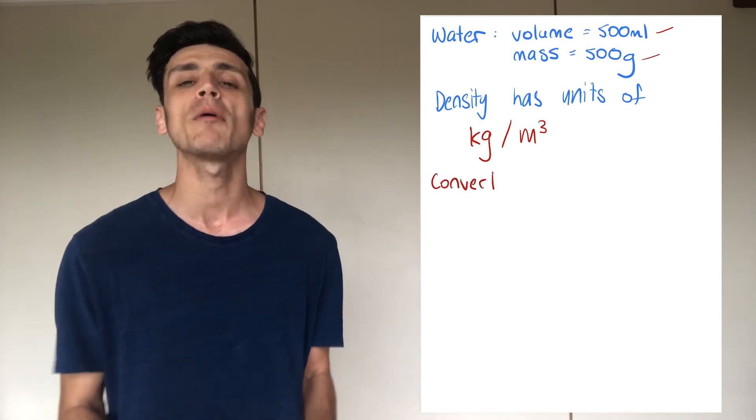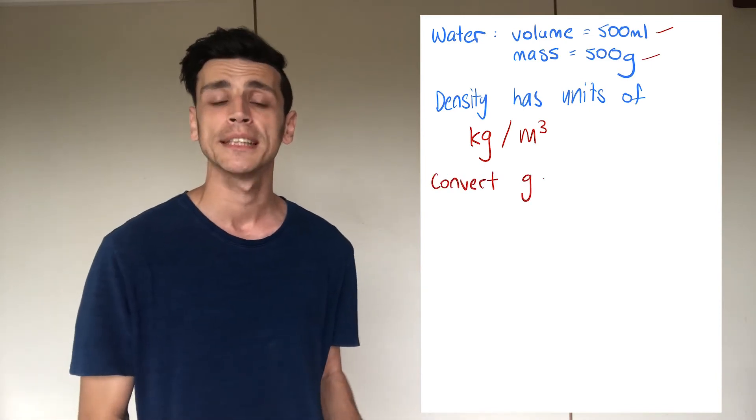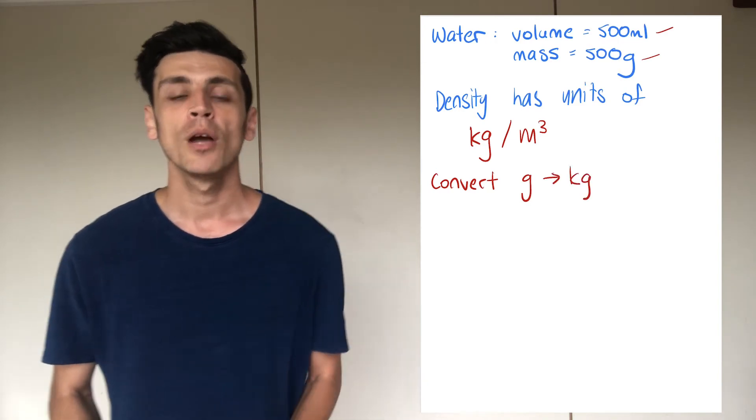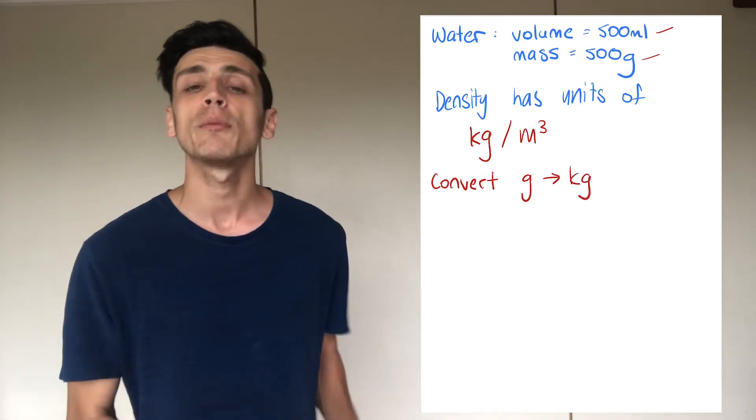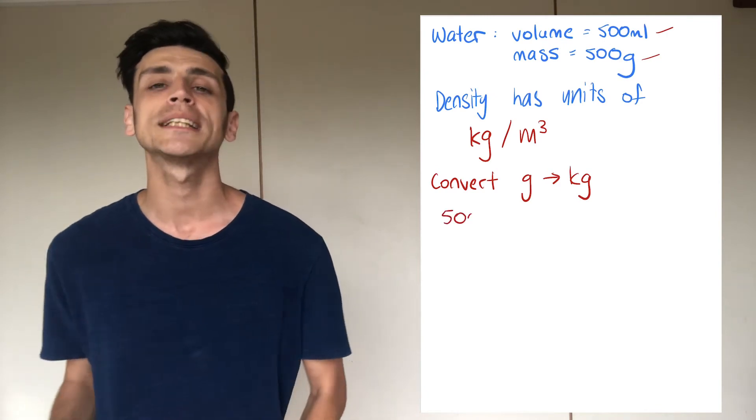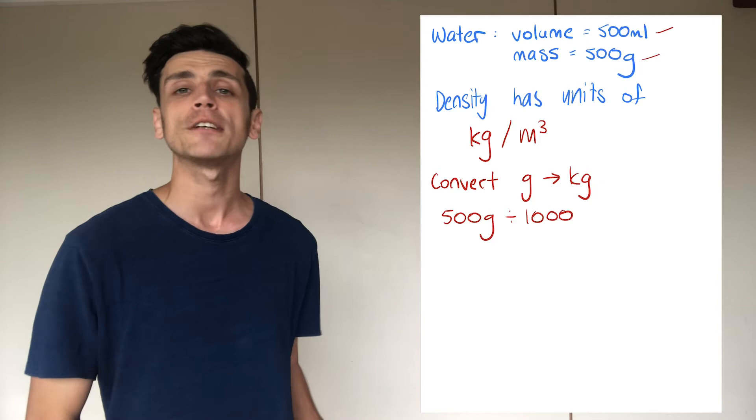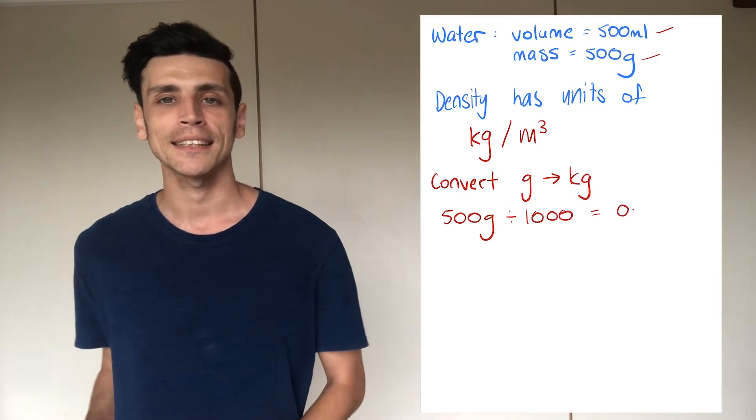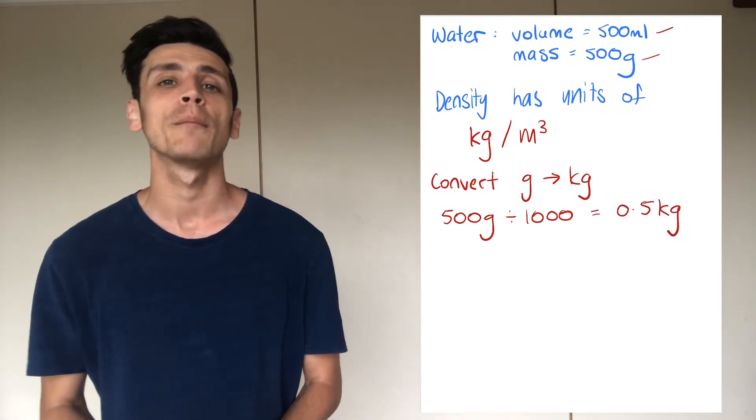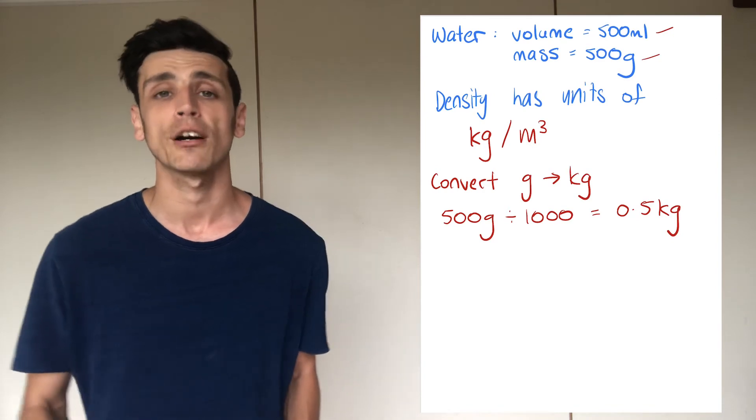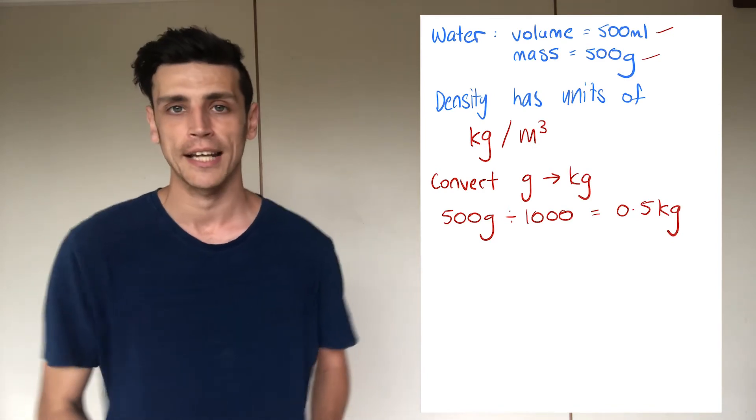Firstly what we're going to need to do is convert grams into kilograms. Well there are a thousand grams in one kilogram so if we want to turn grams into kilograms we simply divide by 1,000. So we'll take our 500 grams and we'll divide it by a thousand and that's going to leave us with 0.5 kilos.